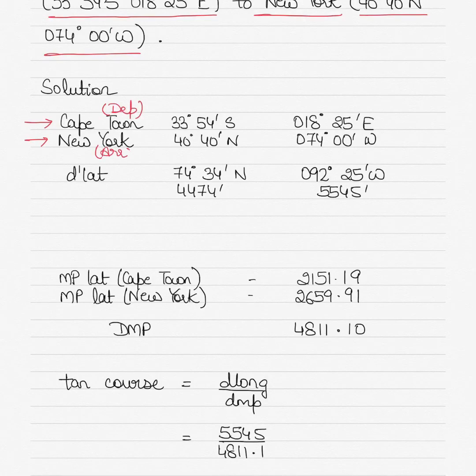Write down the latitude and longitudes given to you from departure position. Cape Town is departure position and New York will be arrival position. You are departing Cape Town and you will be arriving New York. So if you have both the latitudes, let's calculate the D'lat. The rule of thumb is: different names you will add the two latitudes. Same names, you would be subtracting. They are different names—one is south and the other is north.